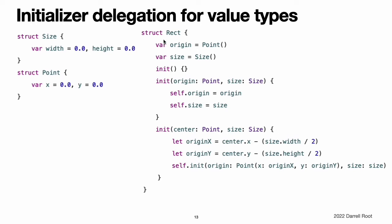This example defines a custom Rect structure to represent a geometric rectangle. The example requires two supporting structures called Size and Point, both of which provide default values of 0.0 for all of their properties. You can initialize the Rect structure in one of three ways: by using its default zero-initialized origin and size property values, by providing a specific origin point and size, or by providing a specific center point and size.